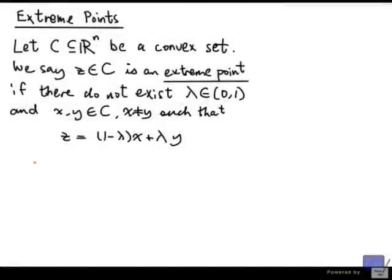In the last video, we looked at how we could define the notion of a corner for a convex set in dimensions higher than three. And the definition that we ended up with was this: Let C be a convex set. We say that a point in C is an extreme point if there do not exist lambda between 0 and 1, and x, y in C, x, y not equal, such that z can be written as 1 minus lambda times x plus lambda times y.